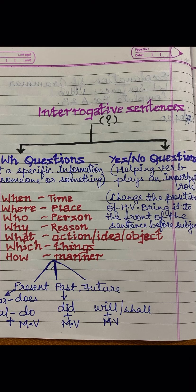In sentences, there may be a helping verb, or there may not be a helping verb — only the main verb. Whenever there is a helping verb, to form a question you will use that same helping verb. When there is no helping verb and only the main verb, you use the special words DO, DOES, or DID. Remember: whenever you use DO, DOES, or DID, use the base form of the verb — not the past tense form or any other form.